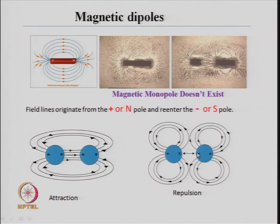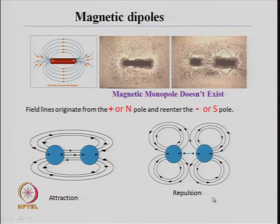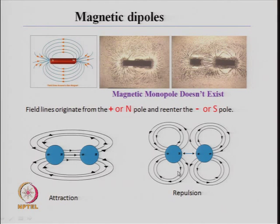If you have two north poles together, there is repulsion between these two dipoles and the lines of force will look somewhat like this. So you can have an attractive force or a repulsive force between two magnetic dipoles, and these lines of force tell you about the magnetic field around these magnetic dipoles.